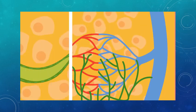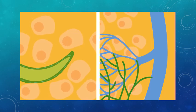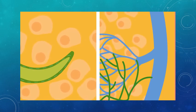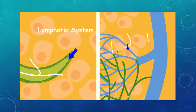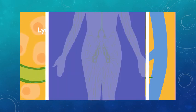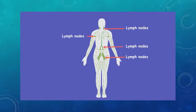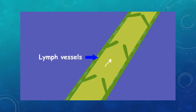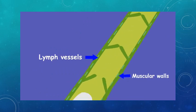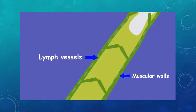We therefore need a system to drain this lymph fluid so that we don't end up as a swollen, fluid-filled balloon — hence the lymphatic system. The lymph fluid drains into lymph vessels, where it then travels to lymph nodes which are found all around your body. To stop backflow, the lymph vessels have one-way valves and muscular walls that contract to force the lymph forward.